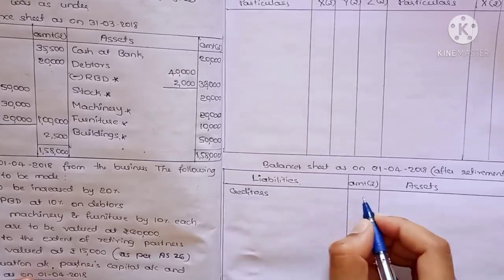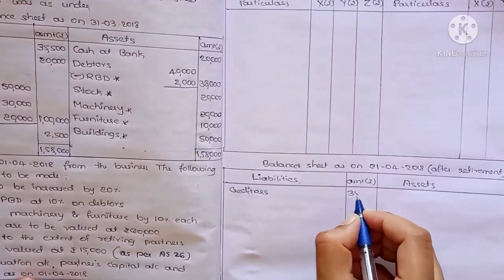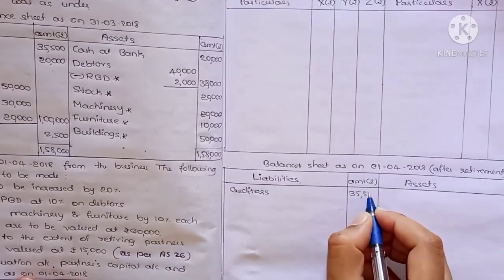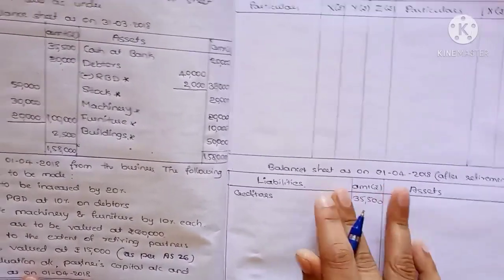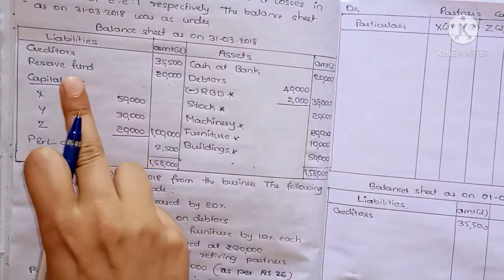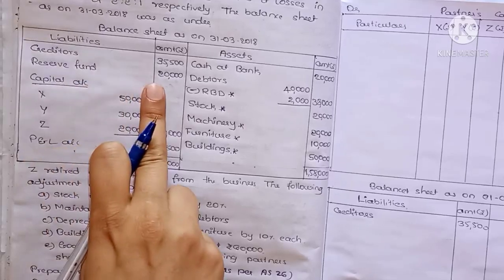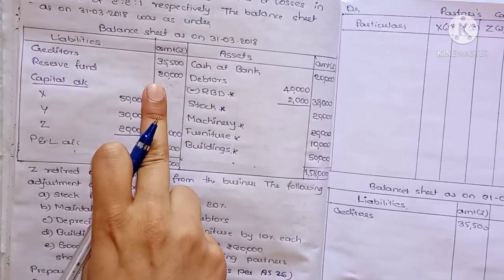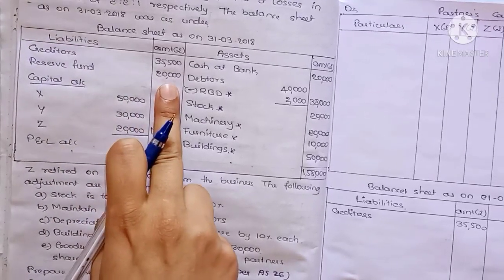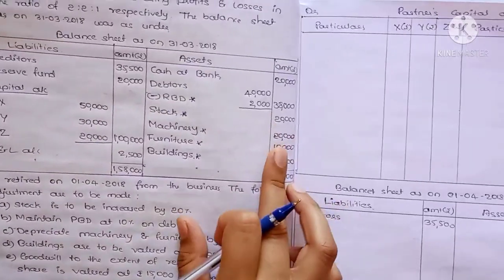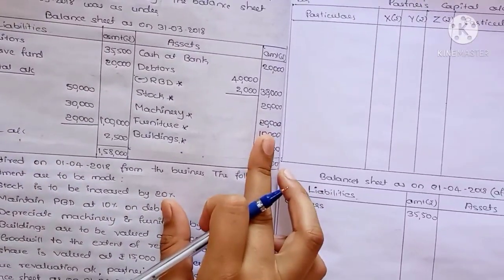So directly in the outer column, $35,500. Next, reserve fund — reserve fund is undistributed profit, so we have to distribute it now in the partners' capital account.